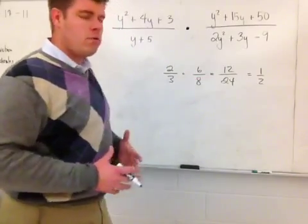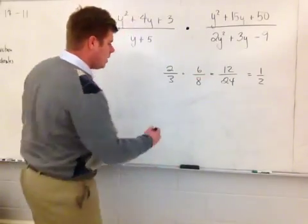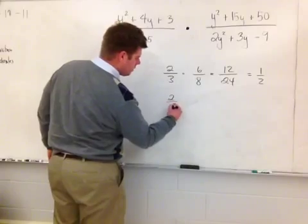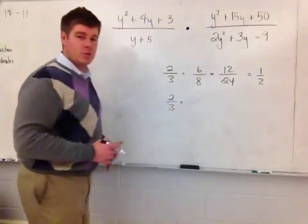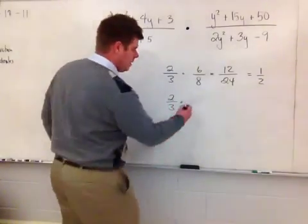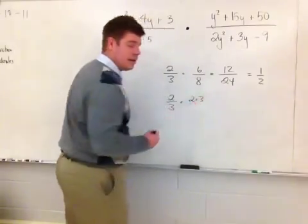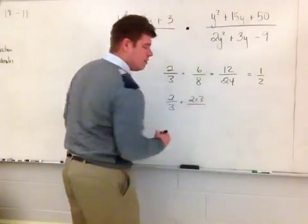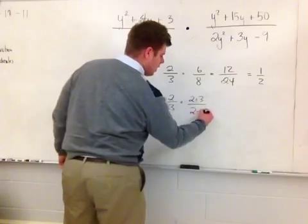And the whole reason that this reduces is because if I take 2 thirds and I times it by 6, well, 6 can be rewritten as 2 times 3, and 8 can be rewritten as 2 times 4.